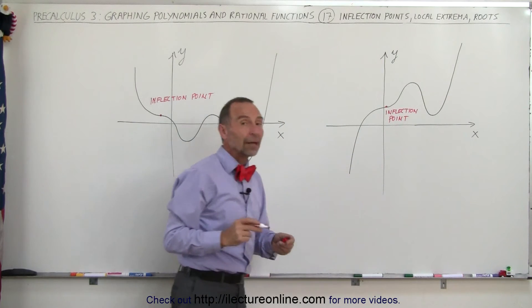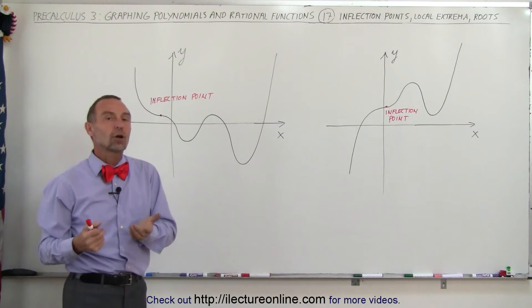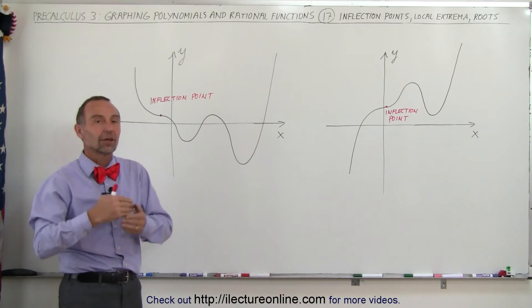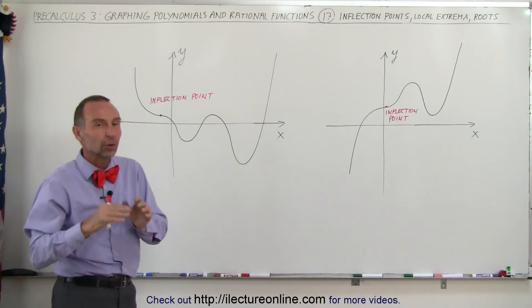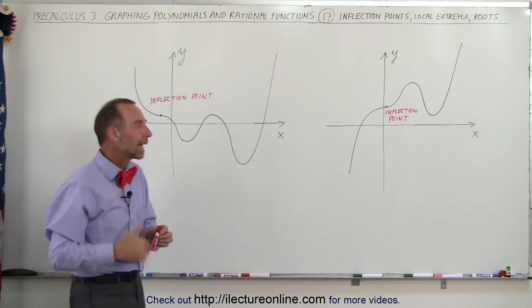Second, we want to look at what we call local max and min. A local max and a min is called a local extrema point, a local extreme point. It has a maximum height in the local vicinity or a minimum height in local vicinity, but it's not the absolute maximum or the absolute minimum.